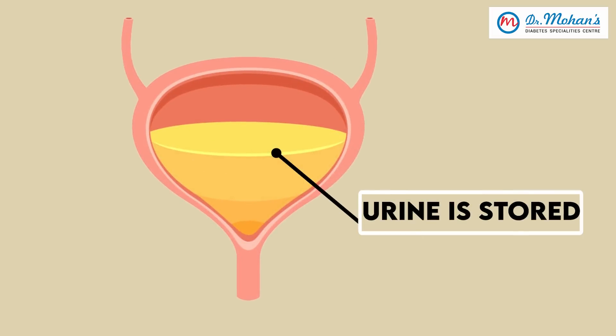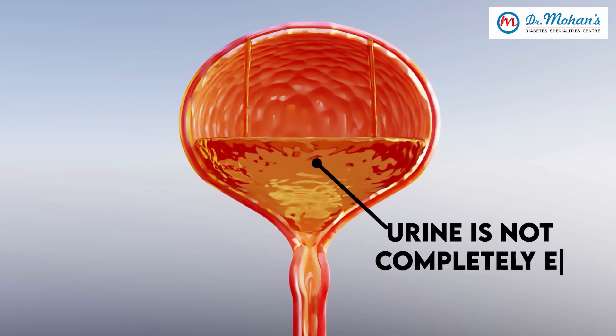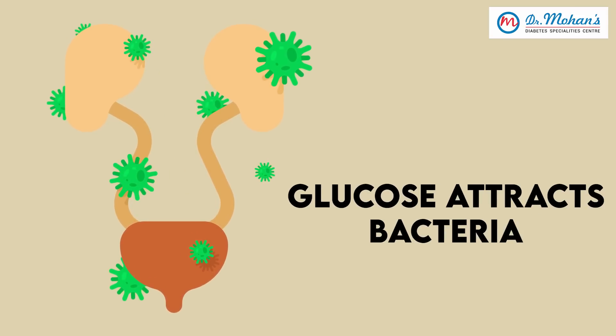Coming down further, the next big organ is the bladder — which is like a balloon. This is where urine is stored. Diabetes can affect the bladder in many ways. First of all, if you have a little residual urine — meaning the urine is not completely emptied — it can be a seat for infection, so you can get a bladder or urinary infection. In people with diabetes this is more common because the glucose in the urine attracts bacteria.